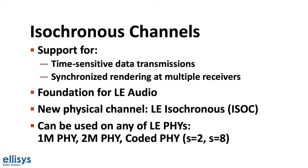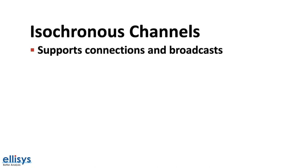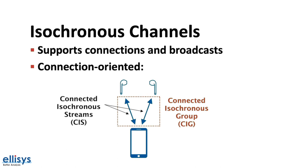Isochronous channels are supported for both connection-oriented and connectionless communication, such as broadcasts. In connection-oriented communication, each stream is referred to as a connected isochronous stream, or CIS. When CISs need to be synchronized, such as ones sent to left and right earbuds, they are configured to be part of a single group referred to as a connected isochronous group, or CIG. Streams that are part of the same CIG share timing reference data, which is necessary for synchronized stream rendering at the multiple receivers.